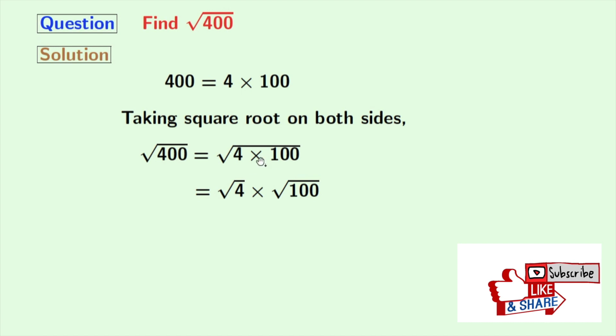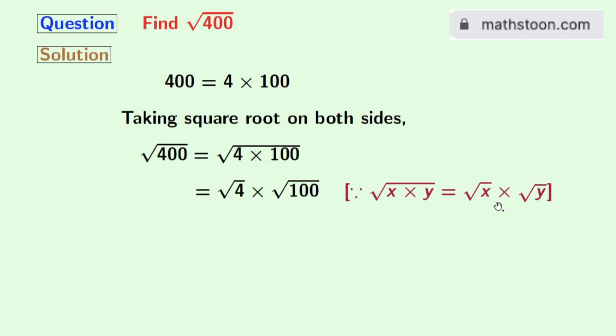Now we will rewrite this as square root of 4 times square root of 100. As we all know that square root of x times y is equal to square root of x times square root of y. Here x is 4 and y is 100.